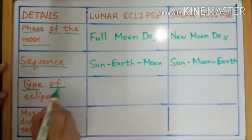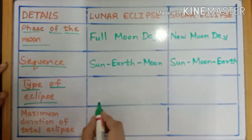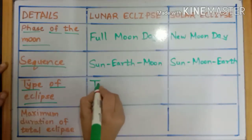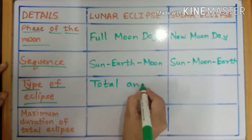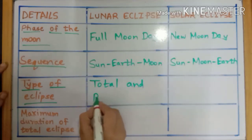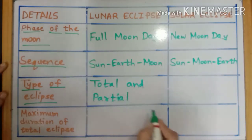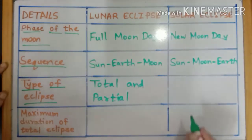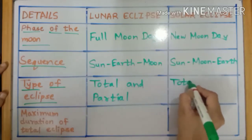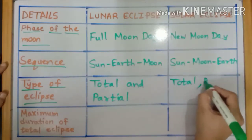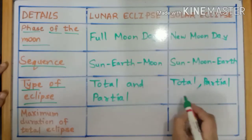The next characteristic is the type of eclipse. Lunar eclipses are of two types: total and partial. Solar eclipses are of three types: total, partial, and annular.